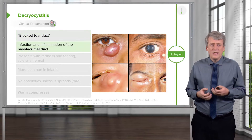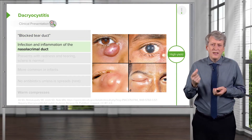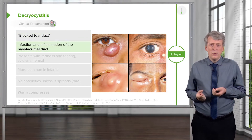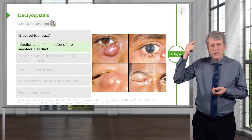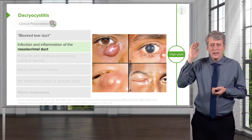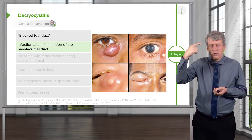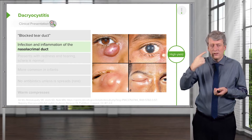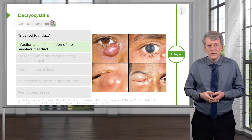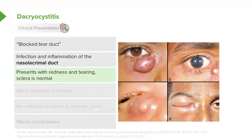This is an infection and inflammation of the nasolacrimal duct. Tears are generated laterally, they sweep across the eye, and then they drain down through the nasolacrimal duct into the nose. This will present with redness and tearing and often excessive tearing, but the sclera typically looks normal. This is more common in infants.